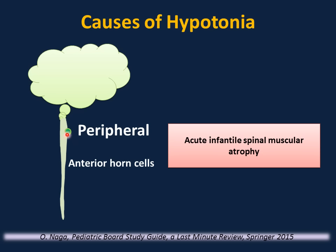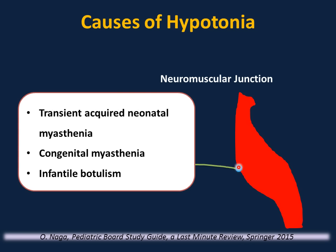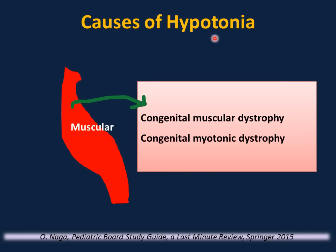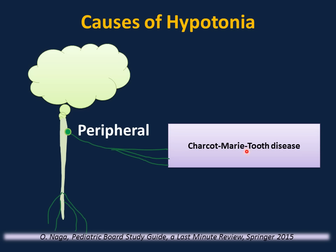Peripheral causes of hypotonia: with destruction of anterior horn cells, the most important cause is acute infantile spinal muscular atrophy — fasciculation is a common association. Neuromuscular junction causes include transient acquired neonatal myasthenia — a neonate born to a mother with myasthenia gravis — congenital myasthenia, and infantile botulism. Muscular causes include congenital muscular dystrophy and congenital myotonic dystrophy. Charcot-Marie-Tooth disease, though presenting in the second decade of life, is the most common inherited neuromuscular disease in pediatrics and important to differentiate from muscular dystrophy such as Duchenne muscular dystrophy.